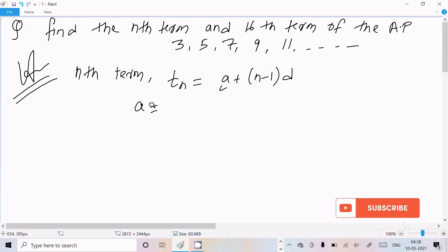Now here the first term is 3 and d equal to the difference of the two terms. So 5 minus 3 or 9 minus 7, the value comes d equal to 2.